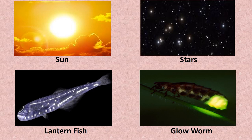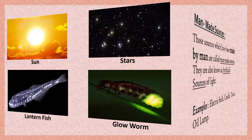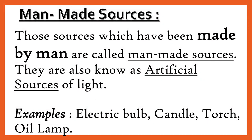Let's have a look at all the examples of natural sources. The second type is man-made sources. Those sources which have been made by man are called man-made sources. They are also known as artificial sources of light. Examples include electric bulb, candle, torch, and oil lamp.